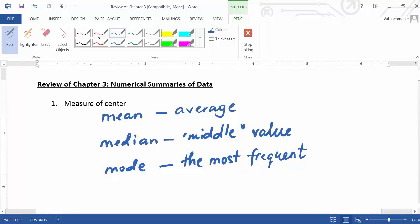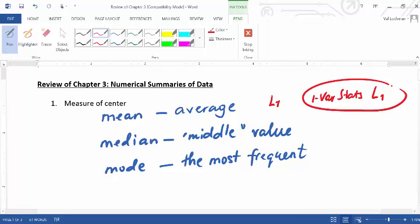So how do we find these things? If you have a set of data, the mean, of course you can add them all up and divide by the number of observations. But we're not gonna do that in this class. Use your calculator to do all the work for you. So you plug in your data in L1 and then you use one variable statistics L1.